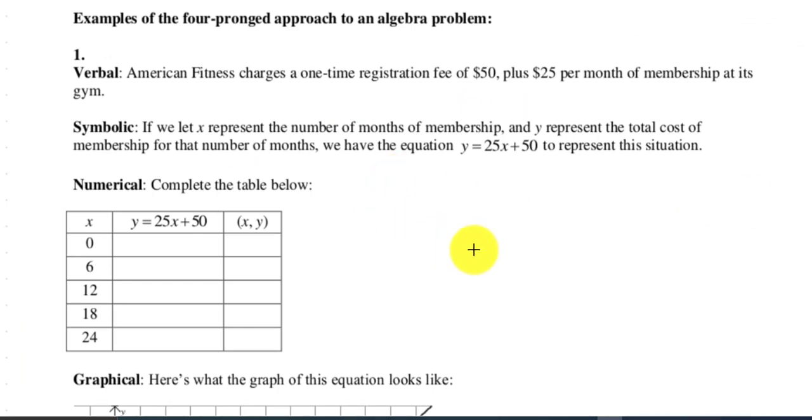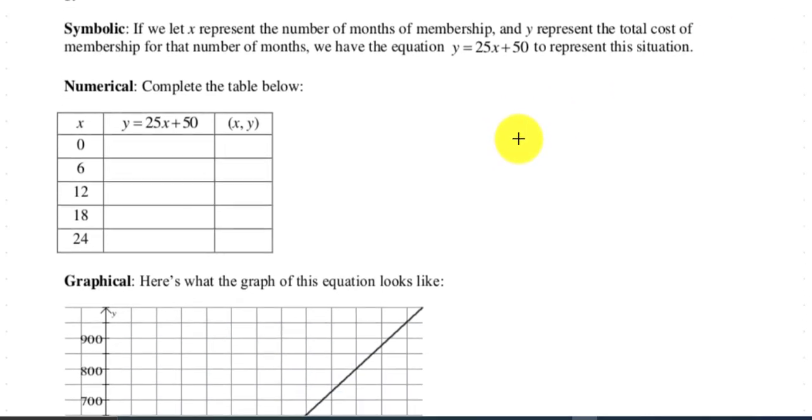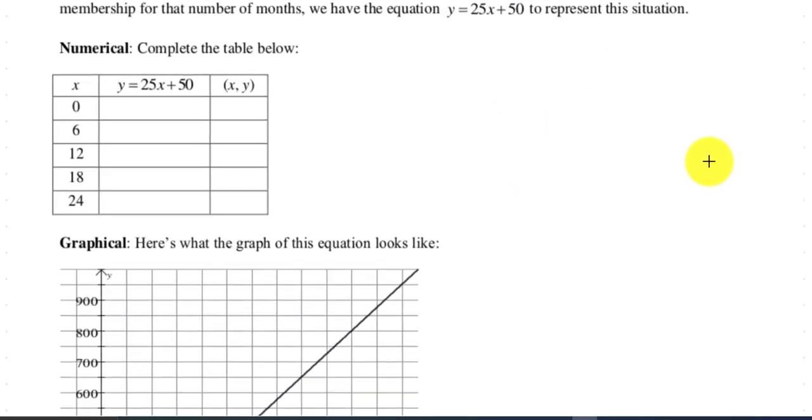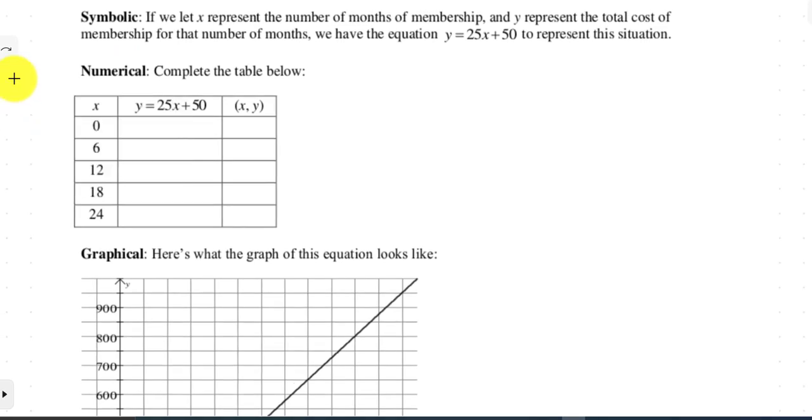And then we're asked to complete the table below. So let's think about this. Using the equation they give us, for zero months, it would be Y equals $25 times zero plus the 50 bucks. So the first day you join, you pay $50, the initiation fee. So this would be 50. And as an ordered pair, it'd be 0, 50.